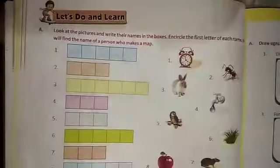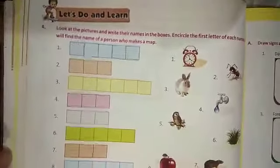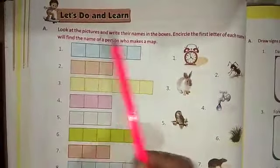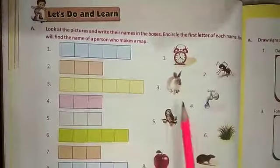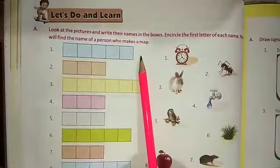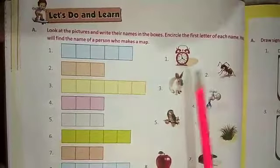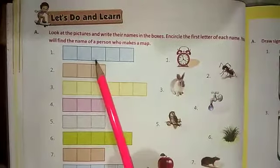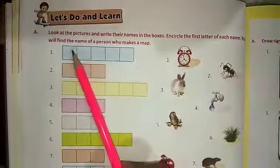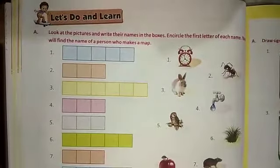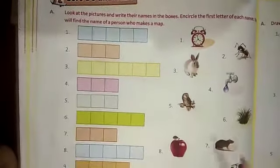After that, you have to do this page also, page 62. Let's do and learn. It is very easy. Look at the picture and write their names in the boxes. Encircle the first letter to each name. You will find the name of person who makes a map. Right here, and encircle the first letter of each name.